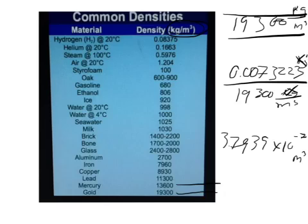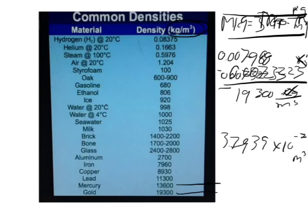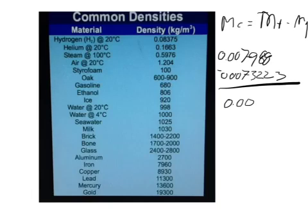And now in order to find the volume of copper, we actually have to find out how much copper was there. So the amount of copper, the mass of copper, is equal to the total mass minus the mass of gold. And so we said that the total mass was 0.007988. And the mass of gold was 0.0073223. And so we could subtract that and find the mass of the copper. So I get 0.0006657, or you could put 6.6657 times 10 to the negative 4th. And that's the same.